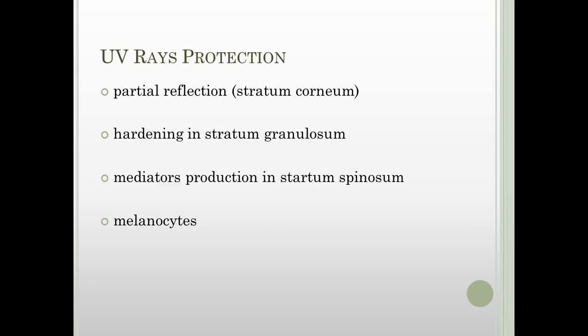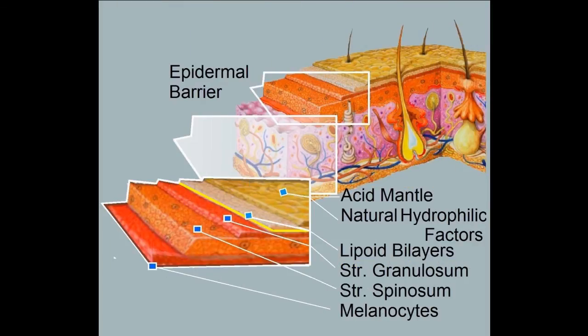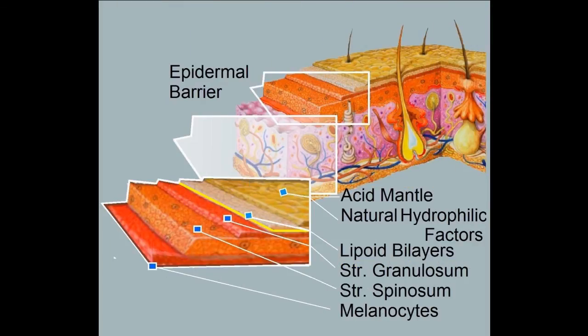Ultraviolet radiation stimulates specialized skin cells called melanocytes to produce melanin, a brown-black skin pigment. Melanin can help to protect skin against further exposure to the sun by filtering out some of the UV rays and gives the skin a tanned appearance. Thanks for your attention.